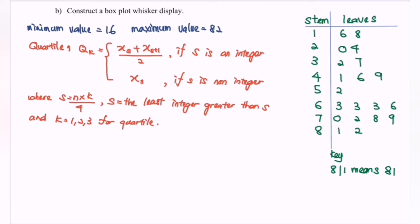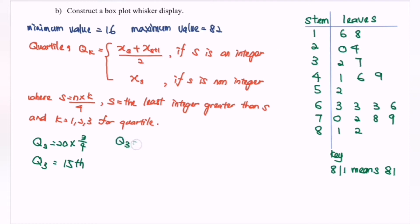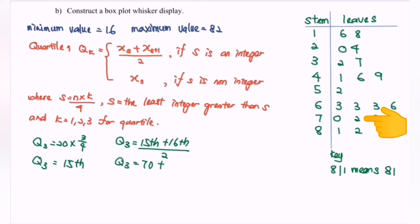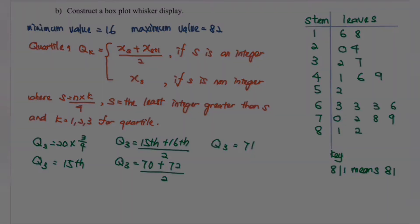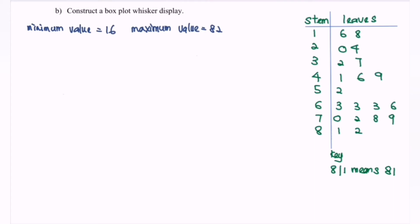Next, find the third quartile Q3. We have 20 multiplied by 3/4, so Q3 is equal to the 15th term. Since 15 is an integer, Q3 equals the 15th term plus the 16th term divided by 2. The 15th term is 70 and the 16th term is 72, so Q3 equals (70 + 72) / 2 = 71.